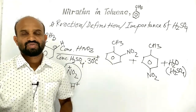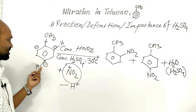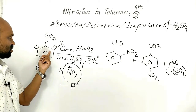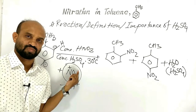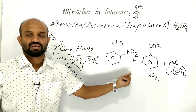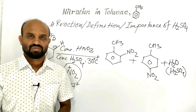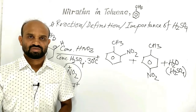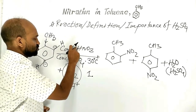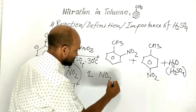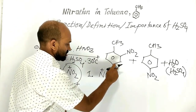Now let's see the definition of nitration. The reaction in which one or more hydrogen atoms from an organic compound are replaced by a corresponding number of nitro groups is called nitration. In this reaction, sulfuric acid plays an important role. Let's see the importance of sulfuric acid in the reaction. Number one: sulfuric acid reacting with nitric acid produces nitronium ion. Without sulfuric acid, nitration is not possible.